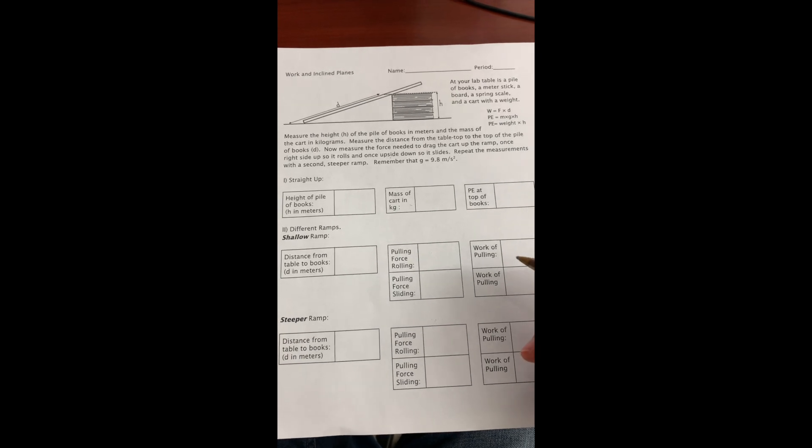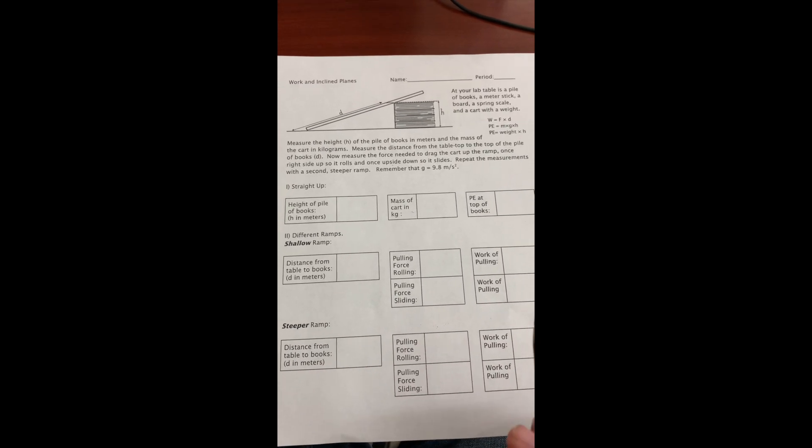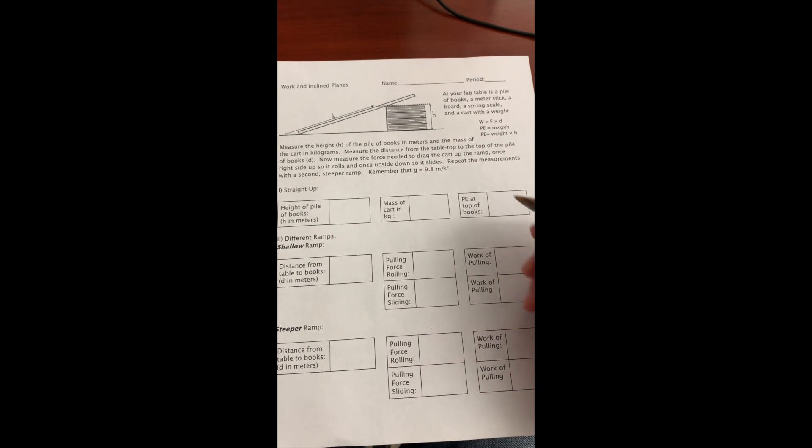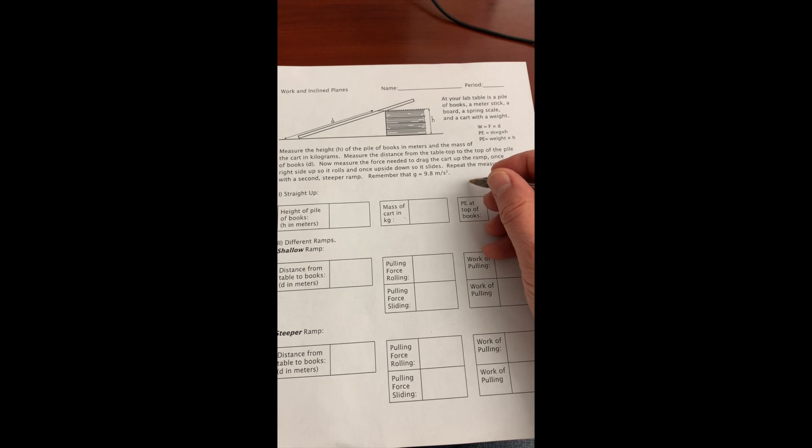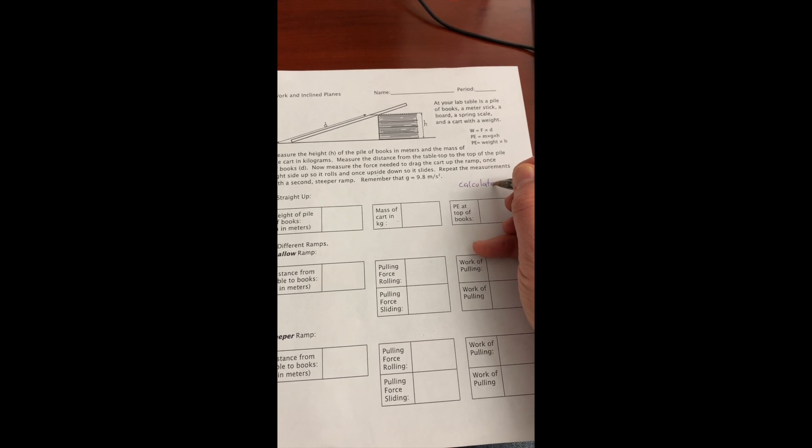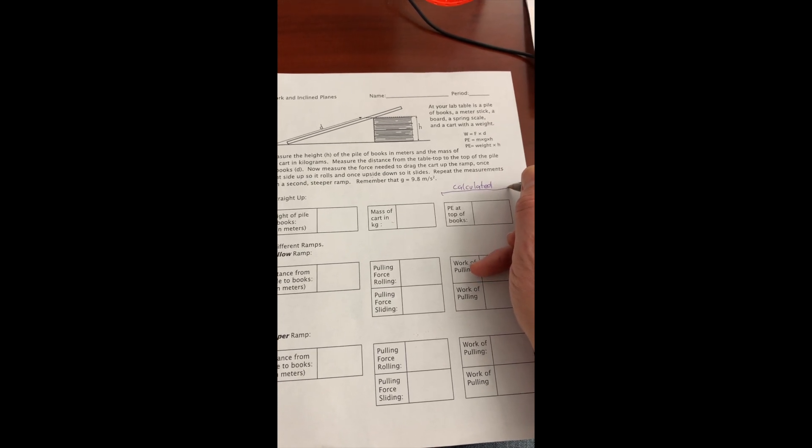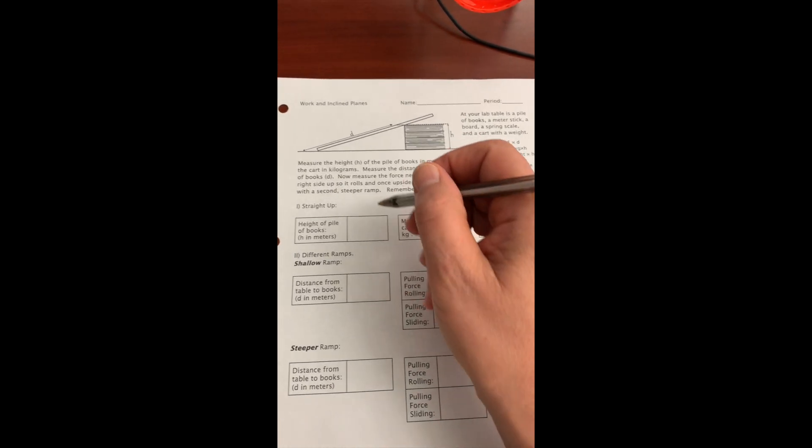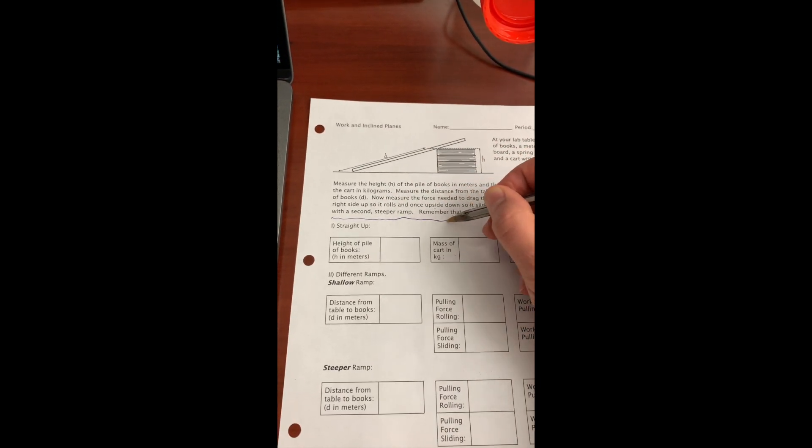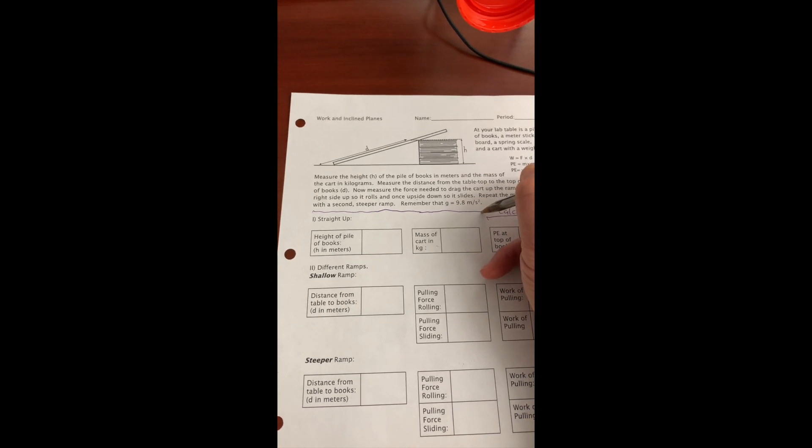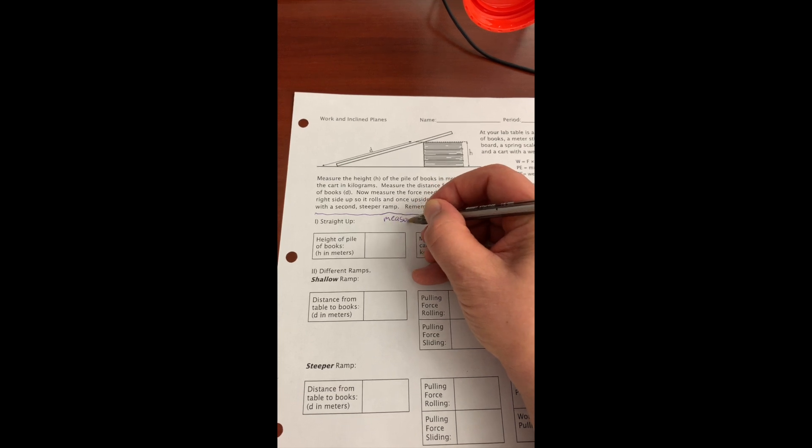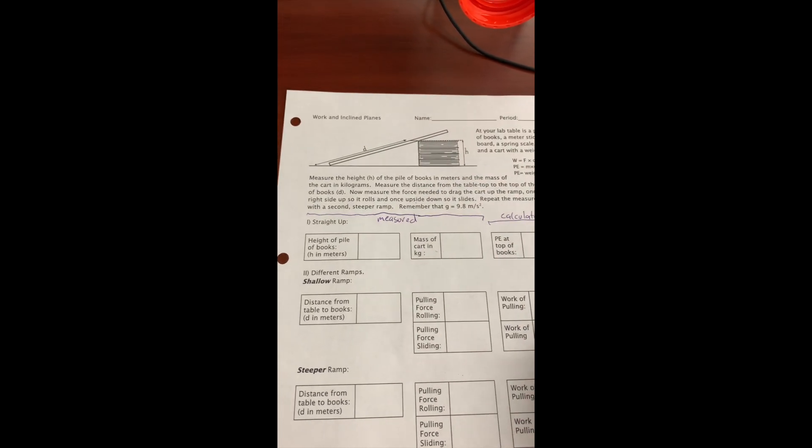Alright, here's the lab sheet. And there are a couple things that I want to point out. One is that this whole column is calculated. You're going to use math to get all the answers in this column. The columns to the left, these guys are all measured. And so when you're doing this lab, when you're looking through the video, for example, these are all things you're going to get from the video.